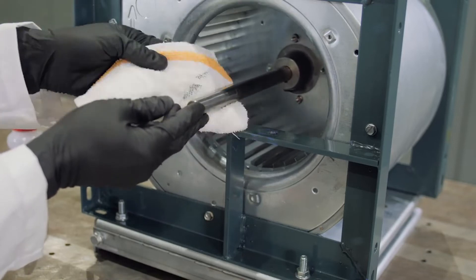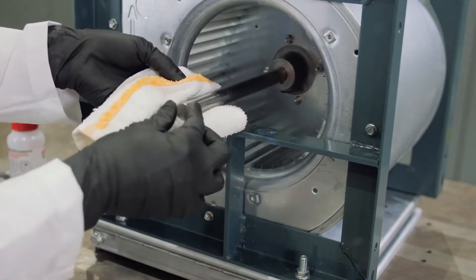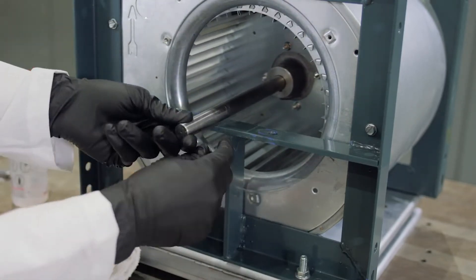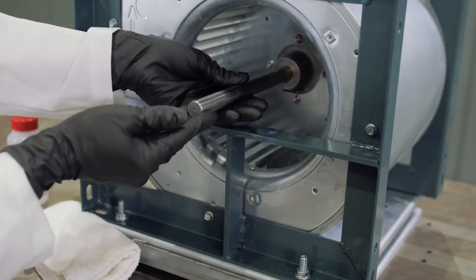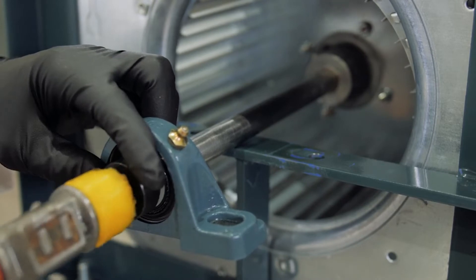If possible, remove the load from the driven shaft. Use the appropriate lifting equipment to safely remove the load. Clean the shaft as needed. Slip the bearing into the desired position.